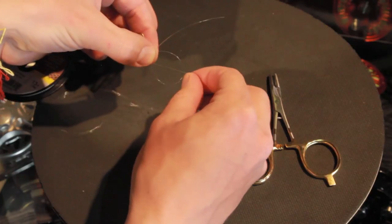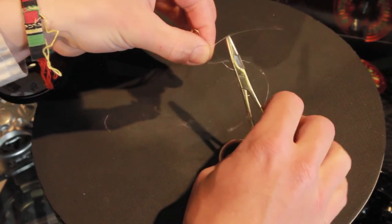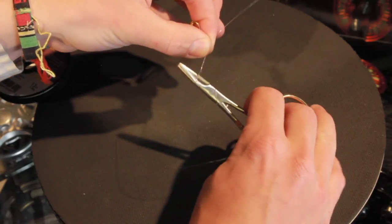Put your hemostats in. Twist around five to six times. Open the hemostats, grab the tag line, and pull through.